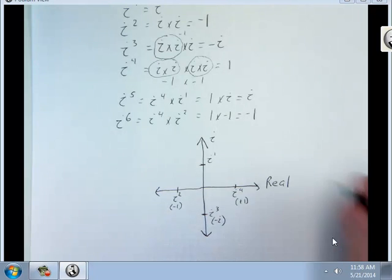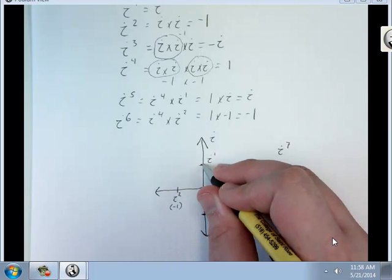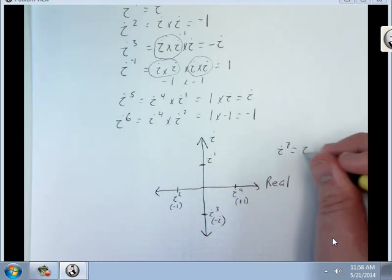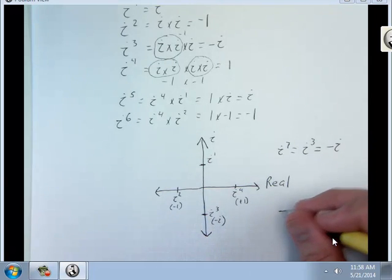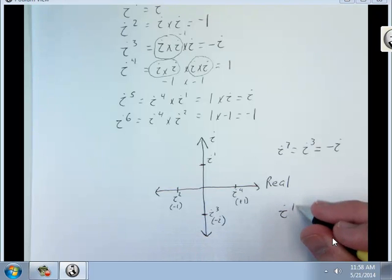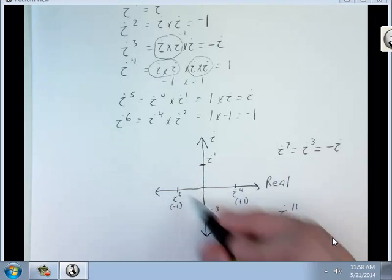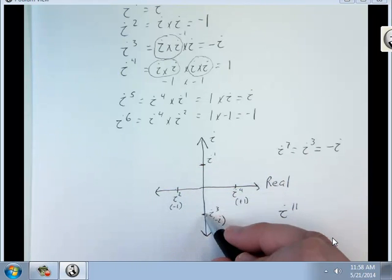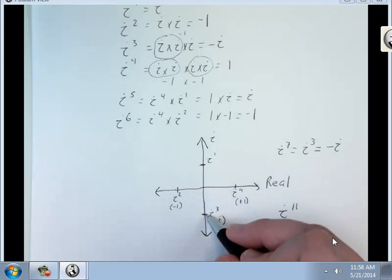Start here for i to the seventh. 1, 2, 3, 4, 5, 6, 7. Which equals i to the third, which is negative i. How about i to the 11th power? Well, we have 1, 2, 3, 4, 5, 6, 7, 8, 9, 10, 11. That's i to the third, which is negative i.